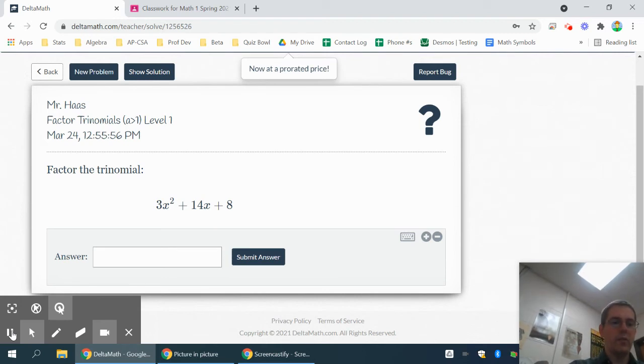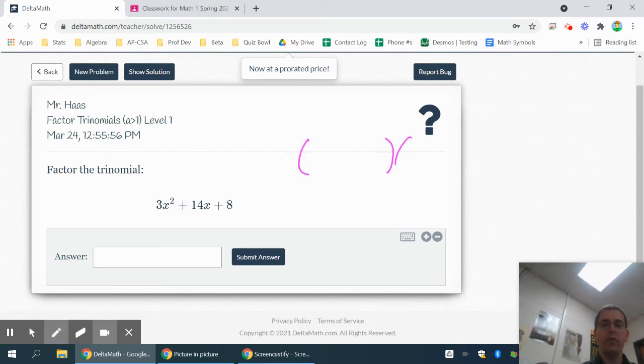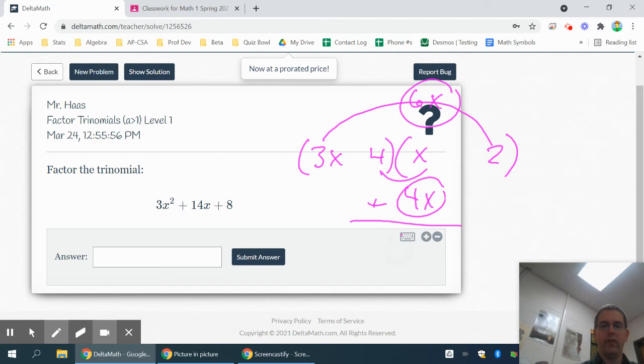For these, because these have a number in front, you cannot just say what multiplies to 8 and adds to 14. You're going to have to use the guess and test method we've learned. So what multiplies to 3x squared is 3x and x. And then what multiplies to 8 is 4 and 2. So to check and see if this is right, I would do 3x times 2 is 6x. Then 4 times x is 4x. When I put my 6x and my 4x together, adding those two things together gives me a 10x. And that is not the correct answer. That is not what I need. So that lets me know something did not work out quite the way I needed it to.